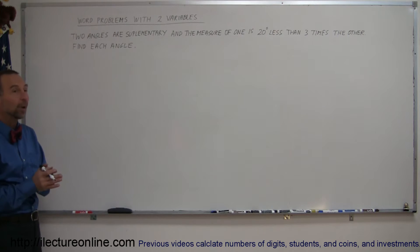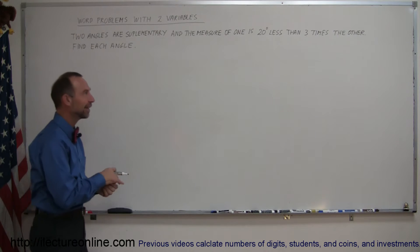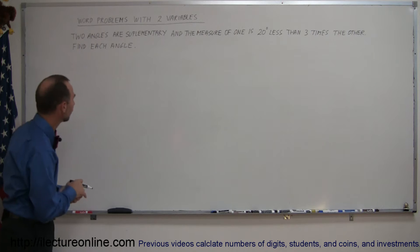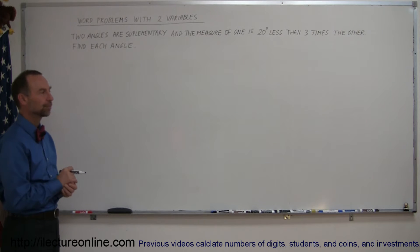Let's use the variables x and y, and always start out by very carefully defining what those two variables represent. Let's read the problem. It says here that we have two angles that are supplementary, and the measure of one is 20 degrees less than three times the other. Find each angle.